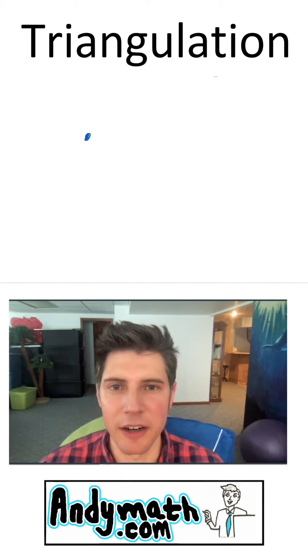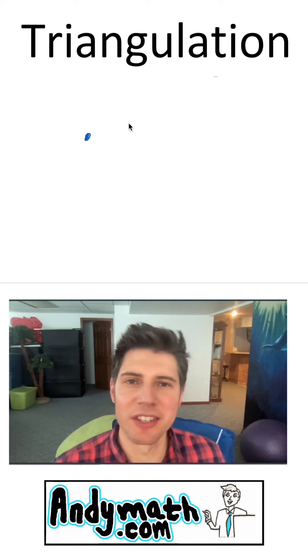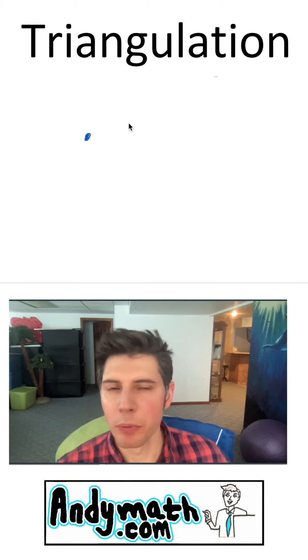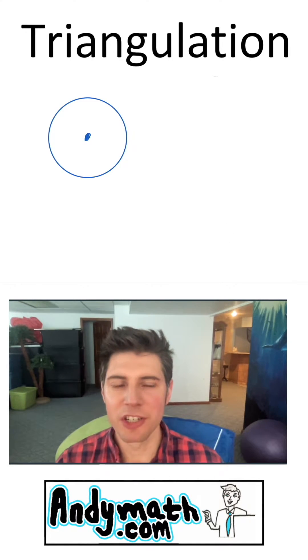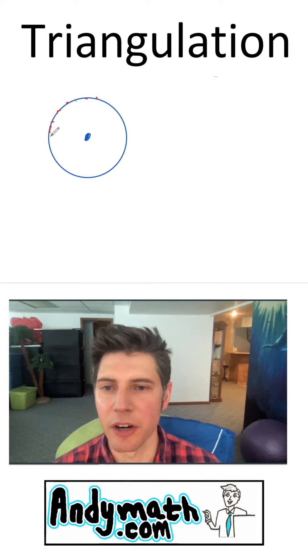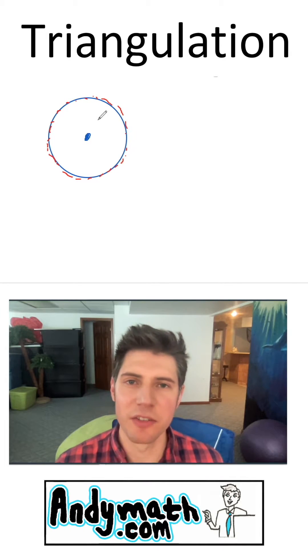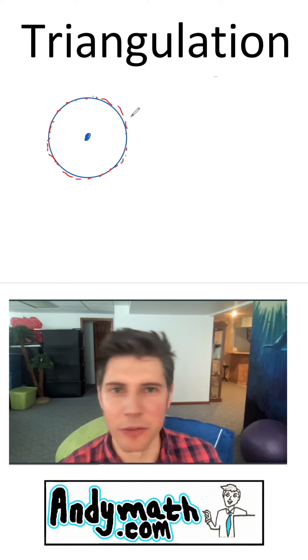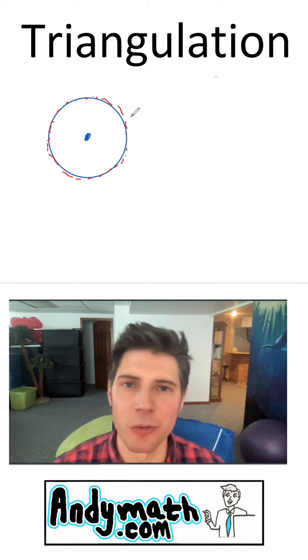So we have a cell phone tower right here and through fancy technology we know that the cell phone is exactly 1.2 miles from here. Using just one tower all we know is that the cell phone is somewhere around here. There's a lot of spaces for us to check. No one's going to find a cell phone in a big circle. We need to hone in on where it is.